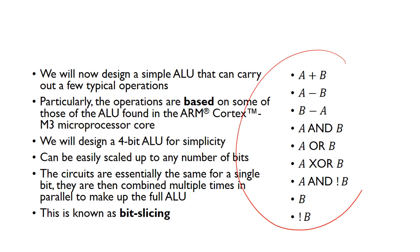Here we can see the operations we are going to do. We are going to do A plus B, A minus B, and B minus A — so an adder or subtractor. Then we have some bitwise logical operations: A AND B, A OR B, A exclusive OR B. And then we also do the bit clear and bit invert clear operations — so A AND NOT B. Finally, two data movement operations: B and NOT B.